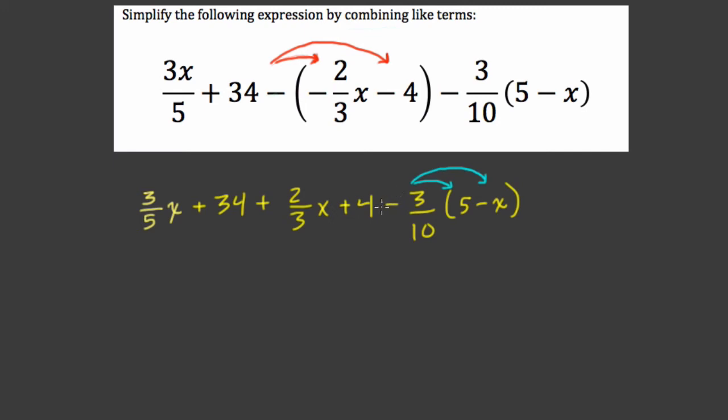Use the sign to the left of the term to give it a positive or negative value. So if I rewrite everything with this one change, I get 3 fifths x plus 34 plus 2 thirds x plus 4. Now minus, well, 3 times 5 is 15 over 10, because you do 10 times, this is 5 over 1, so it's over 10. Minus, well, it's minus x here, but it's minus 3 tenths. So we have negative times a negative, that's a positive. So we have positive 3 tenths times x.